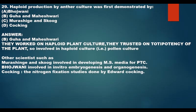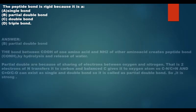Haploid production via anther culture was first demonstrated by Guha and Maheshwari. They worked on haploid plant culture, trusting in the totipotency of the plant, and were specifically involved in pollen culture. Other scientists: M.S. Khush developed MS media for plant tissue culture; Bhojwani worked on in vitro embryogenesis and organogenesis; Cocking was involved in nitrogen fixation studies.